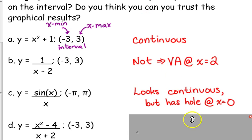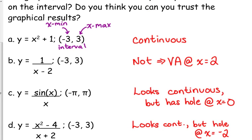Factor. And what happens when you factor? A factor cancels. x plus 2 cancels in the numerator and the denominator. All we're left with is x minus 2. x minus 2 is a linear function. So this one looks continuous, but we have a hole at x equals negative 2.